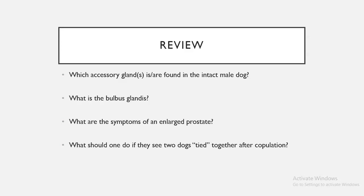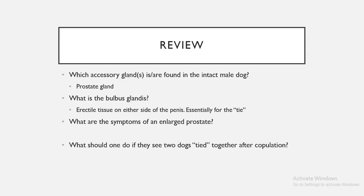Review: The accessory gland found in the intact male dog is the prostate gland. The bulbous glandis is erectile tissue on either side of the penis used to tie two dogs together after copulation. Symptoms of an enlarged prostate include difficult urination and compression of the colon, causing challenges with both urination and defecation. If two dogs are tied together after copulation, leave them alone and wait — it normally takes about half an hour.